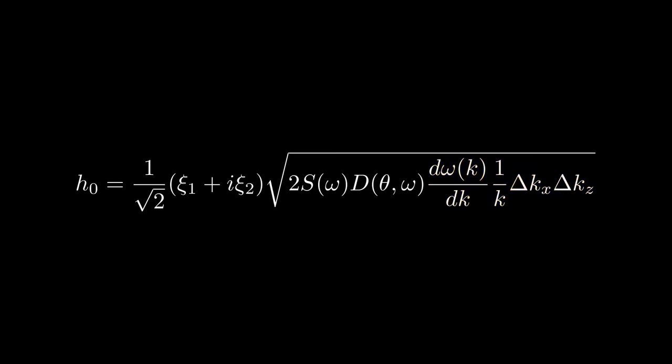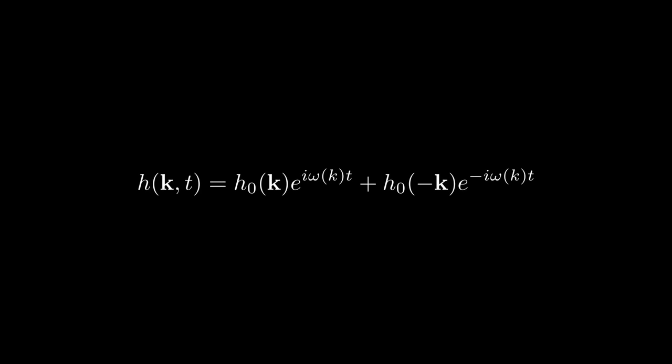This is our stationary spectrum. To evolve it in time, according to Tessendorf, we should use this equation. It guarantees that the result of the FFT will be a real number.